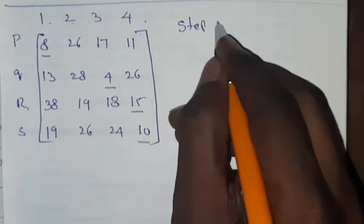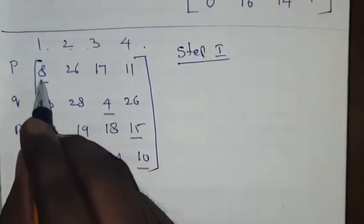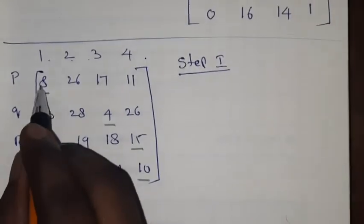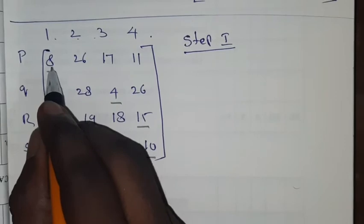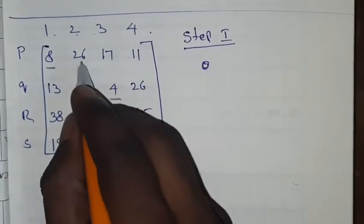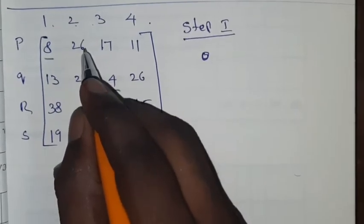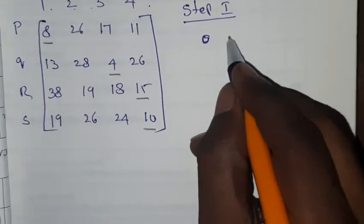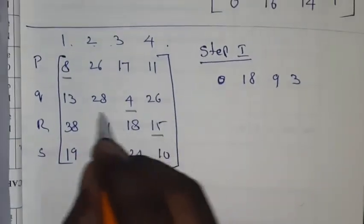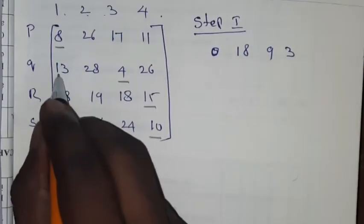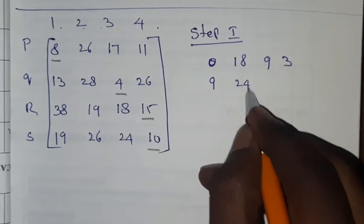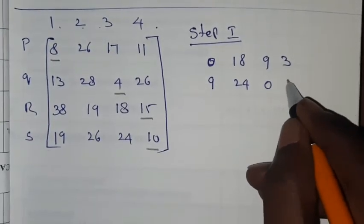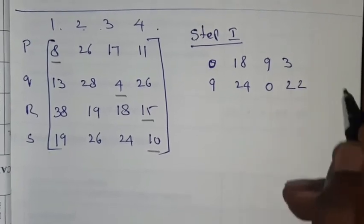For the first row, identify the minimum value. Subtract from each element: 8 minus 8 is 0, 26 minus 8 is 18, 17 minus 8 is 9, 11 minus 8 is 3. Next row, the minimum value is 4. 13 minus 4 is 9, 28 minus 4 is 24, 4 minus 4 is 0, 26 minus 4 is 22.